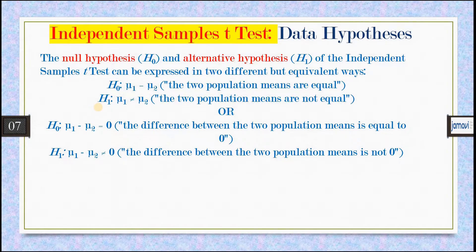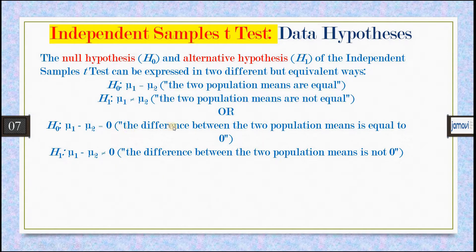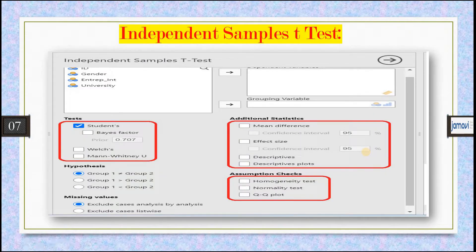There are two types of hypotheses. The null hypothesis (H₀) assumes that the population means of the two groups are equal (μ₁ = μ₂), or equivalently that the difference between the two population means equals zero. The alternative hypothesis (H₁) states that the population means are not equal (μ₁ ≠ μ₂), or that the difference between the two population means is not equal to zero.